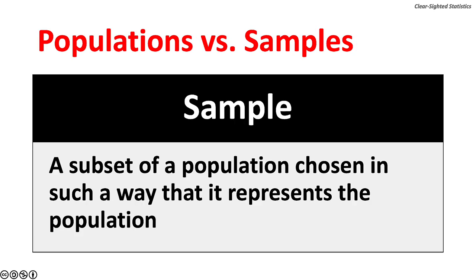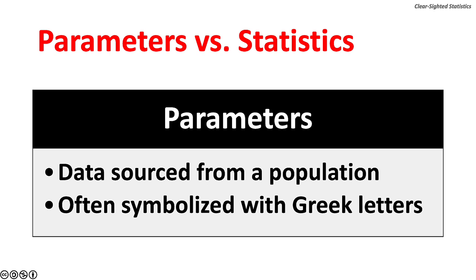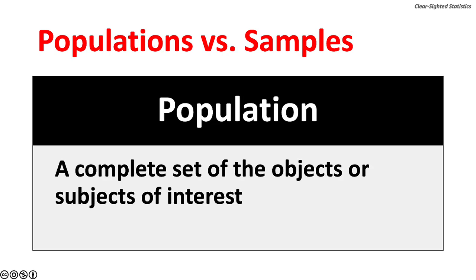A sample is a subset of a population. We typically deal with data drawn from samples, and in future lectures we will discuss how samples should be drawn from populations. Parameters are data sourced from a population, usually symbolized with Greek letters. A population is a complete set of objects or subjects of interest — for example, every person living in the United States, the entire student body of a school, or every item produced at a factory.